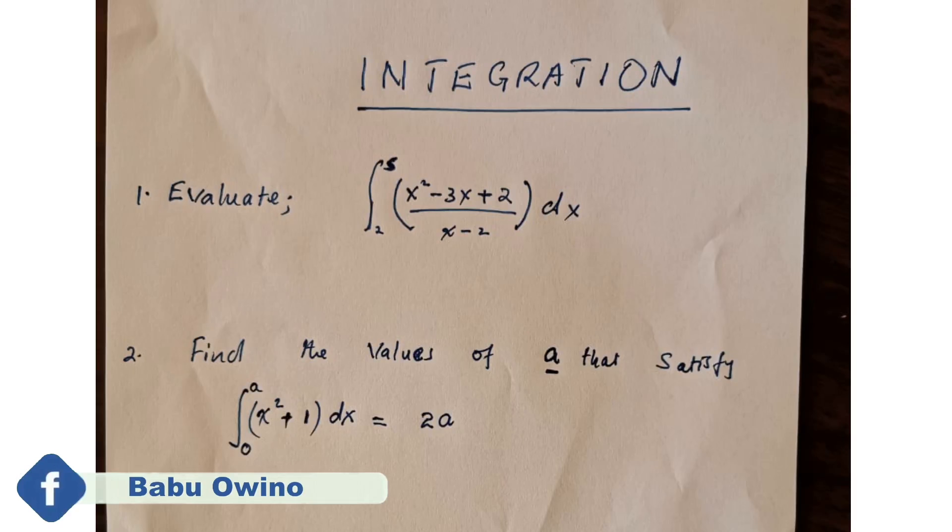You are told to integrate. This sign means integration with the limits of 5 and 2. So integrate x squared minus 3x plus 2 divided by x minus 2 with reference to dx.